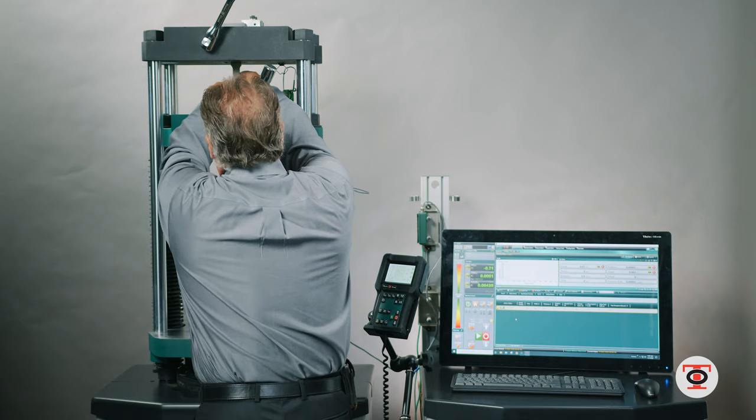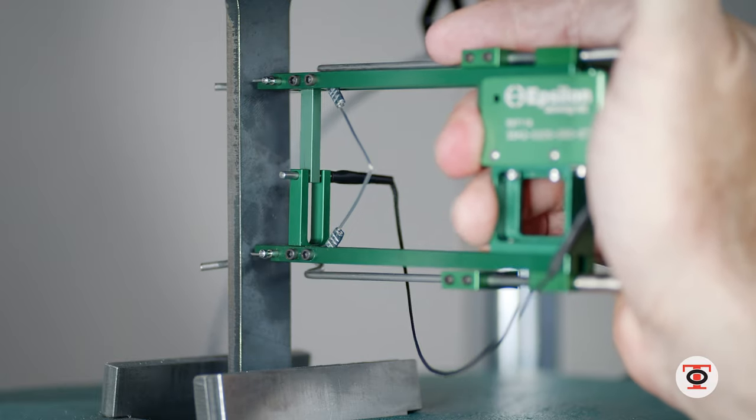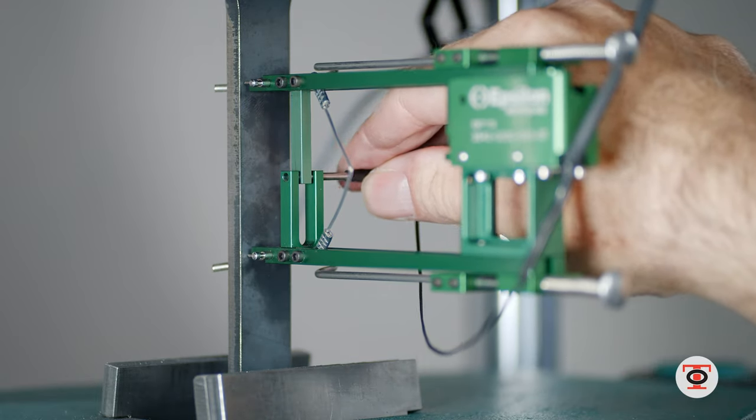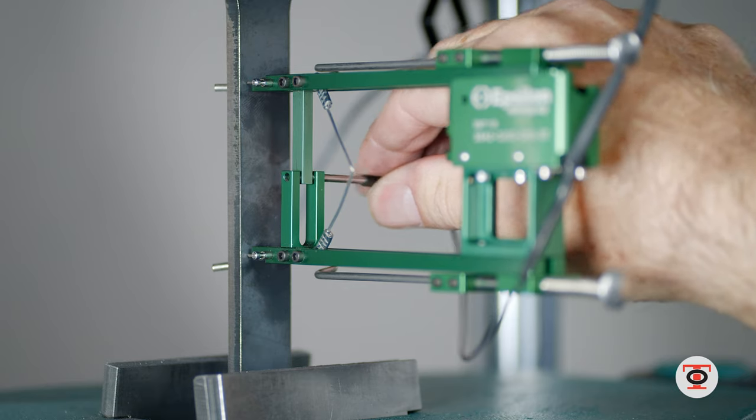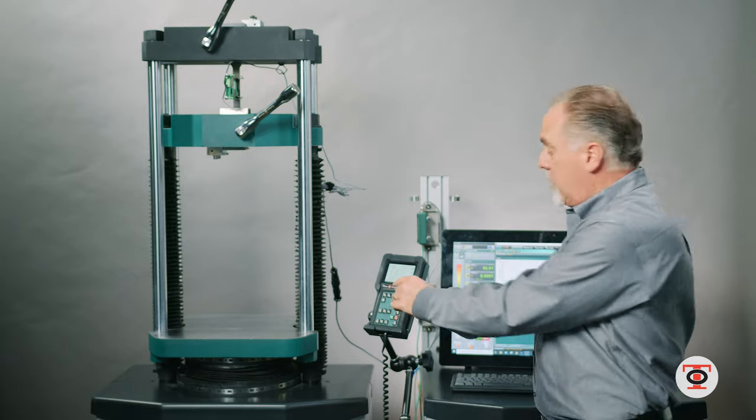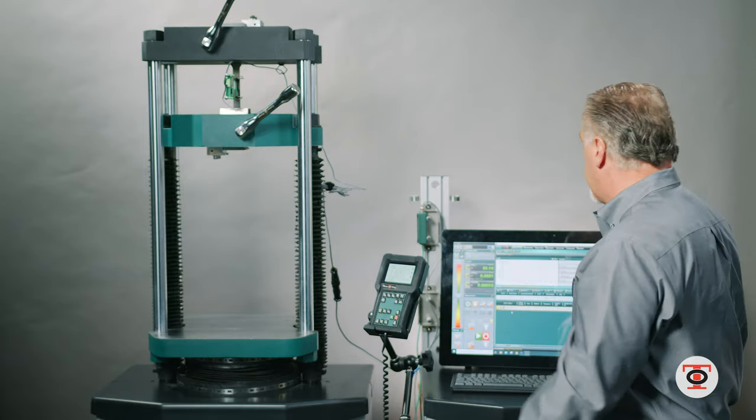I'm now going to put the clip-on extensometer on. Make sure that it's centered top to bottom and in the center of the specimen if possible, and then I will pull the pin, the zero pin, to get ready to start the test. I can zero the instrument from the pro term or I can zero it from the software.